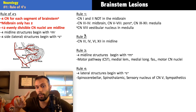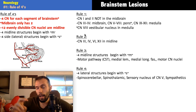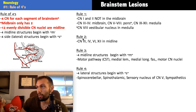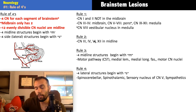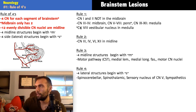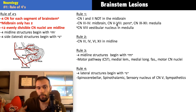Rule two is really important. If you take the number 12 and divide it by the cranial nerve number, and it's evenly divisible, the nucleus is midline. If it's not evenly divisible, the nucleus is lateral. For example, cranial nerve three: 12 divided by 3 equals 4 — evenly divisible, so it's midline. Cranial nerve six, the abducens: 12 divided by 6 equals 2 — evenly divisible, so it's midline.